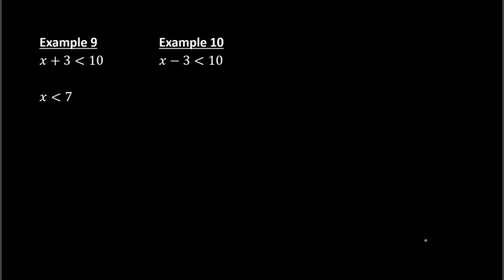Example 10: I have x minus 3 is less than 10. To get rid of subtraction I need to add 3 to both sides. So we'd have x on the left and then 10 plus 3 is 13 on the right. So my answer is x is less than 13.